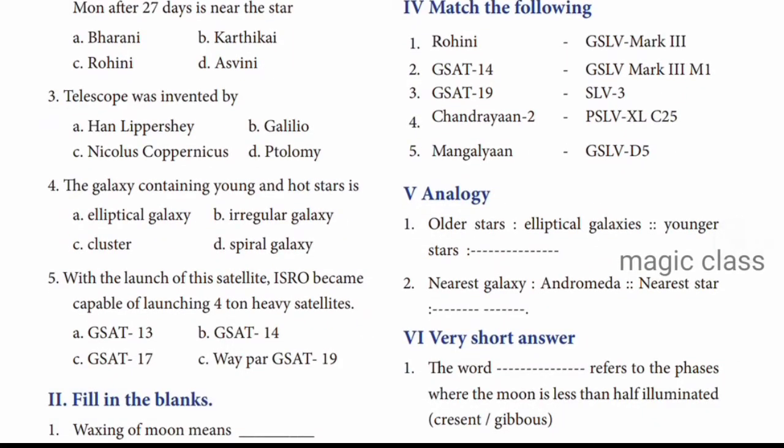Question number 3: Telescope was invented by - Option A - answer is Hans Lippershey. Question number 4: The galaxy containing young and hot stars. Looking at the galaxy types - spiral galaxy, irregular galaxy, barred galaxy - the galaxy with young and hot stars is Option D, spiral galaxy.